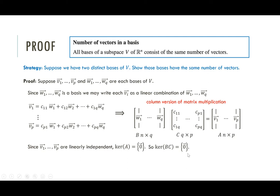This actually implies that the kernel of C by itself equals zero. This follows from a result in your pre-assignment: the kernel of C is a subset of the kernel of BC. Since the kernel of BC is just the zero vector, and the kernel of C is a subset of it, the kernel of C must also be just the zero vector.